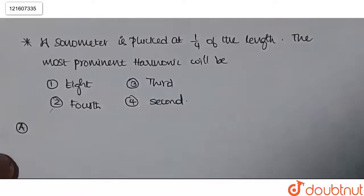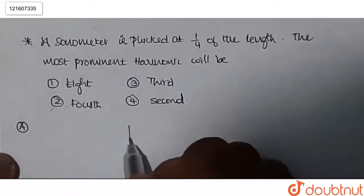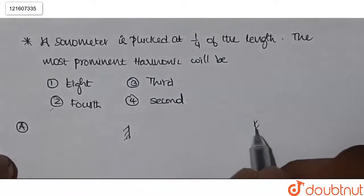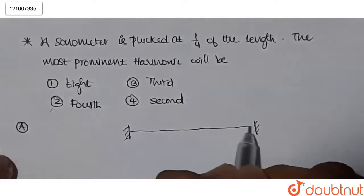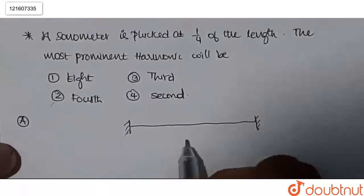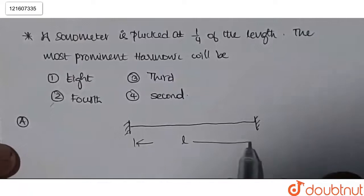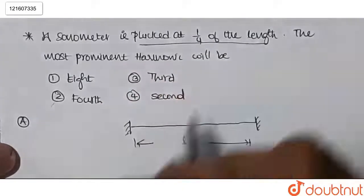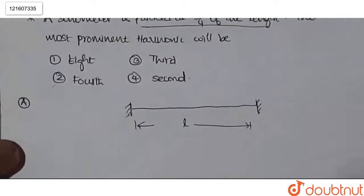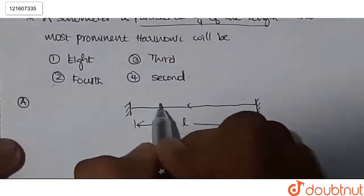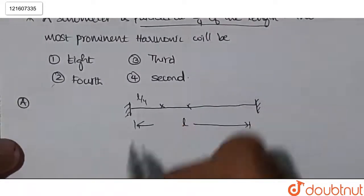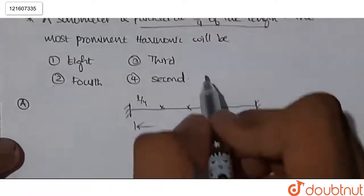So we have a string here. Let us say it is like this. It is fixed in the two ends. So let us say it is L length. So plucked at L by 4 length means, let us say this is half length. So this will be L by 4 distance. So we have a plucked here.